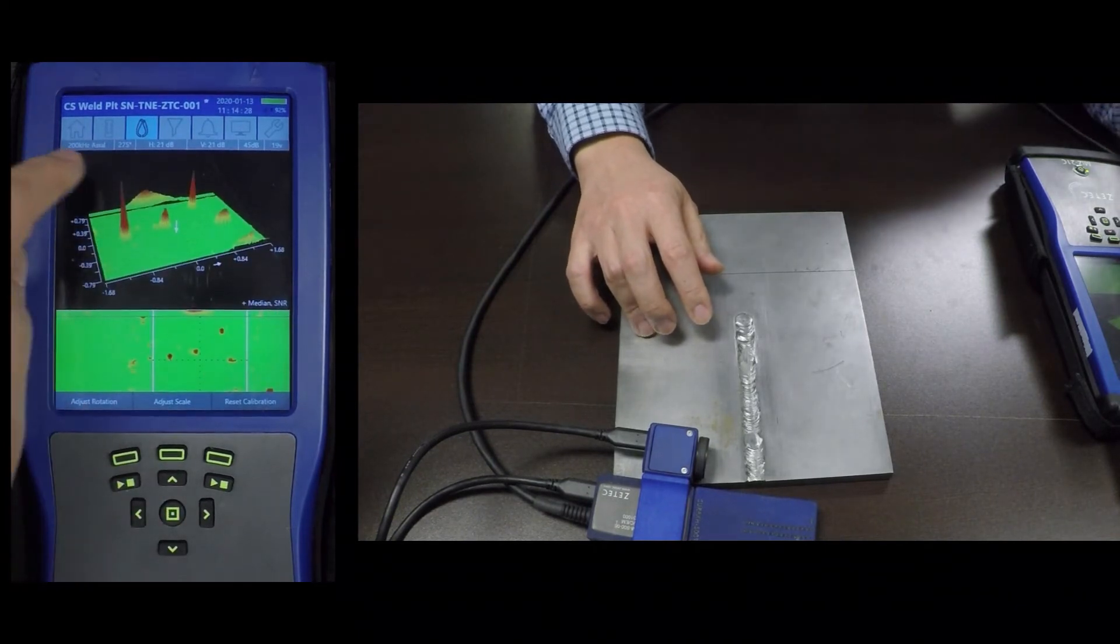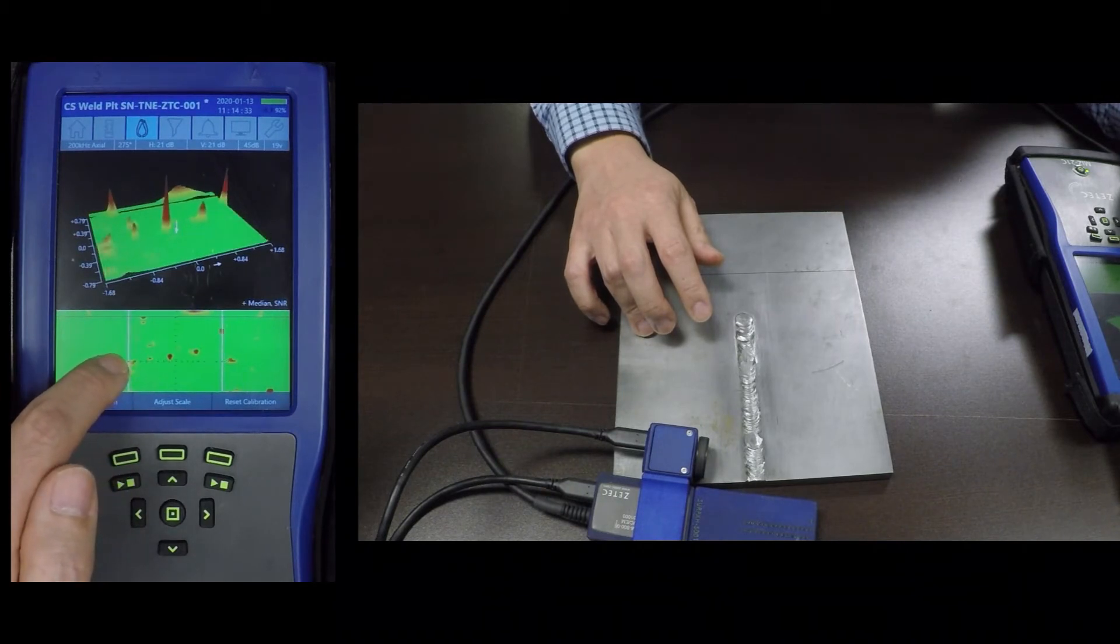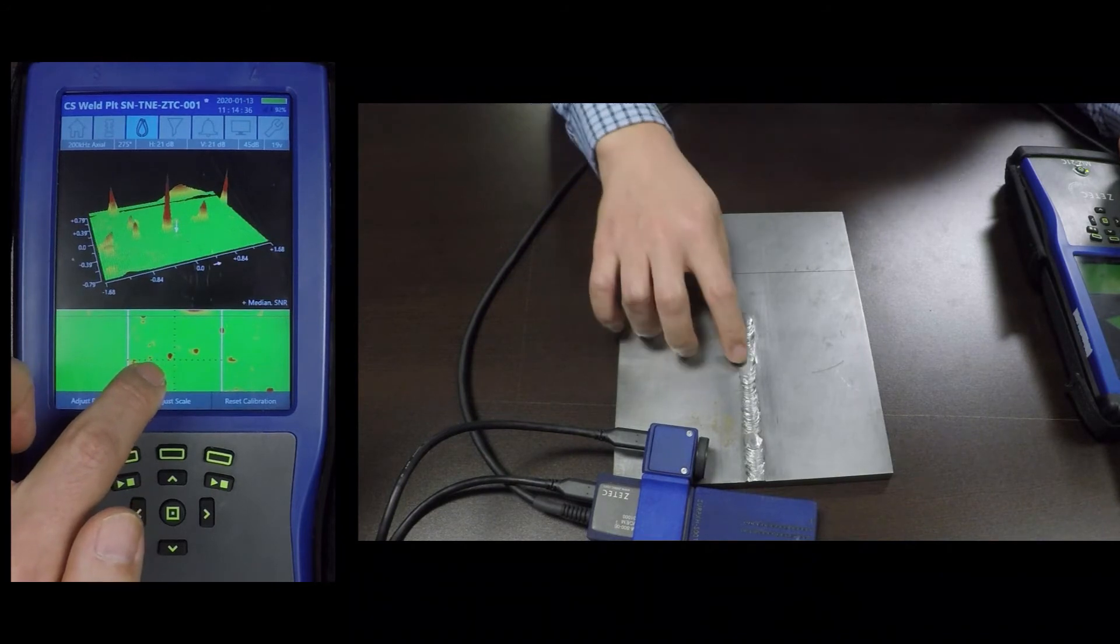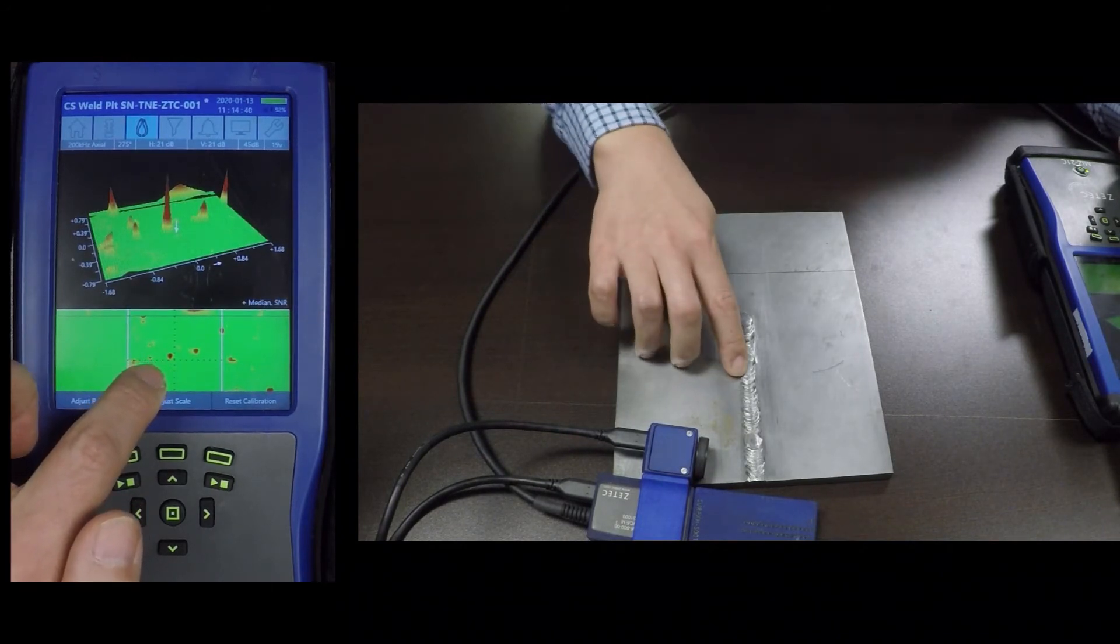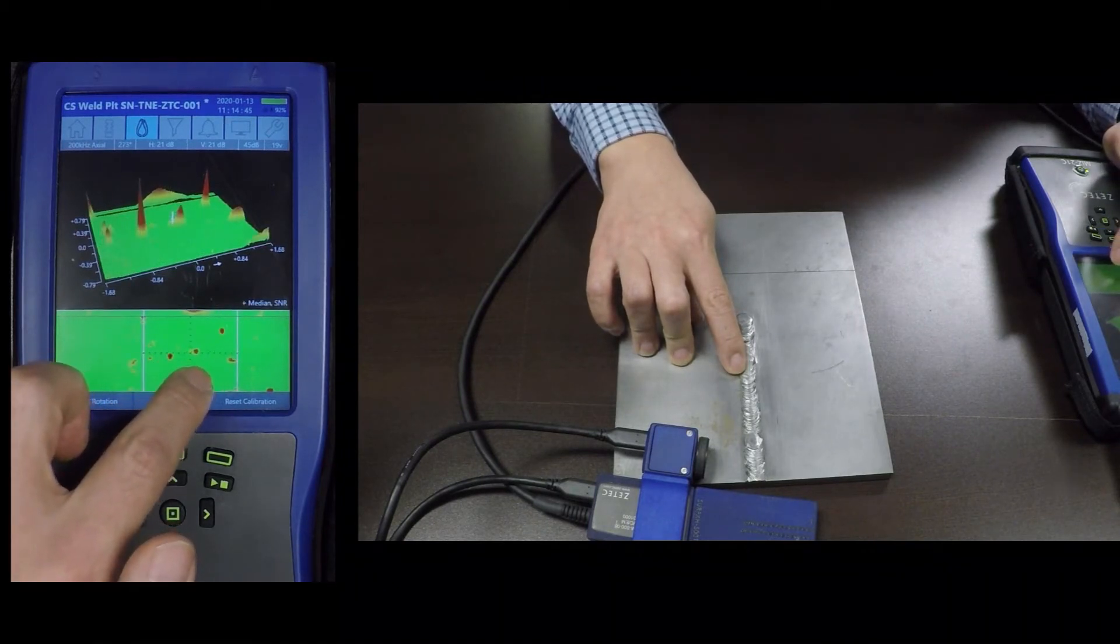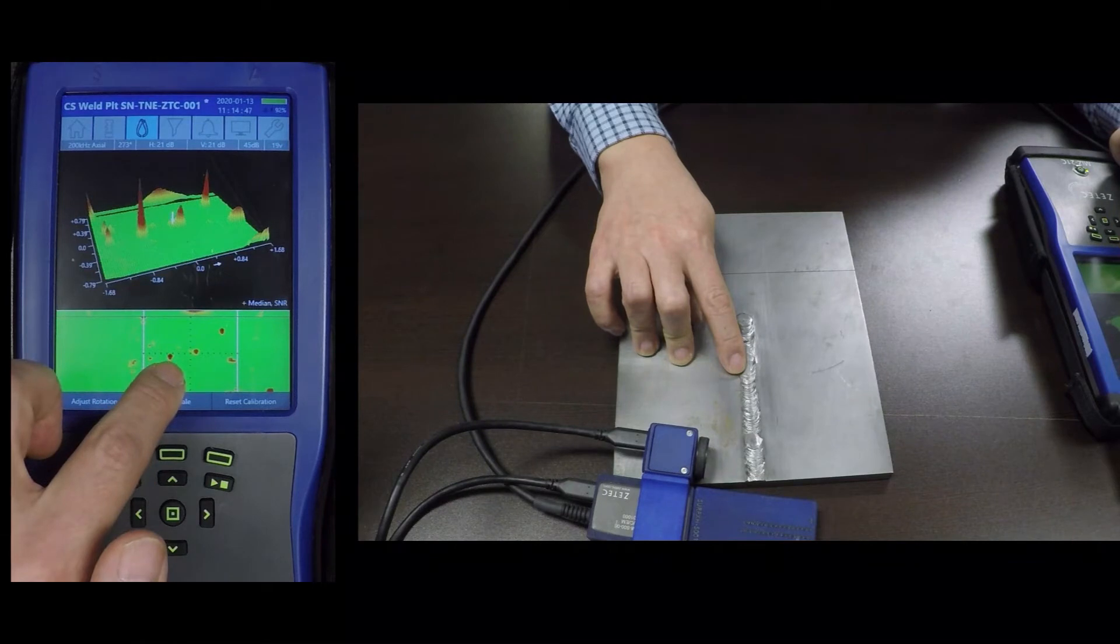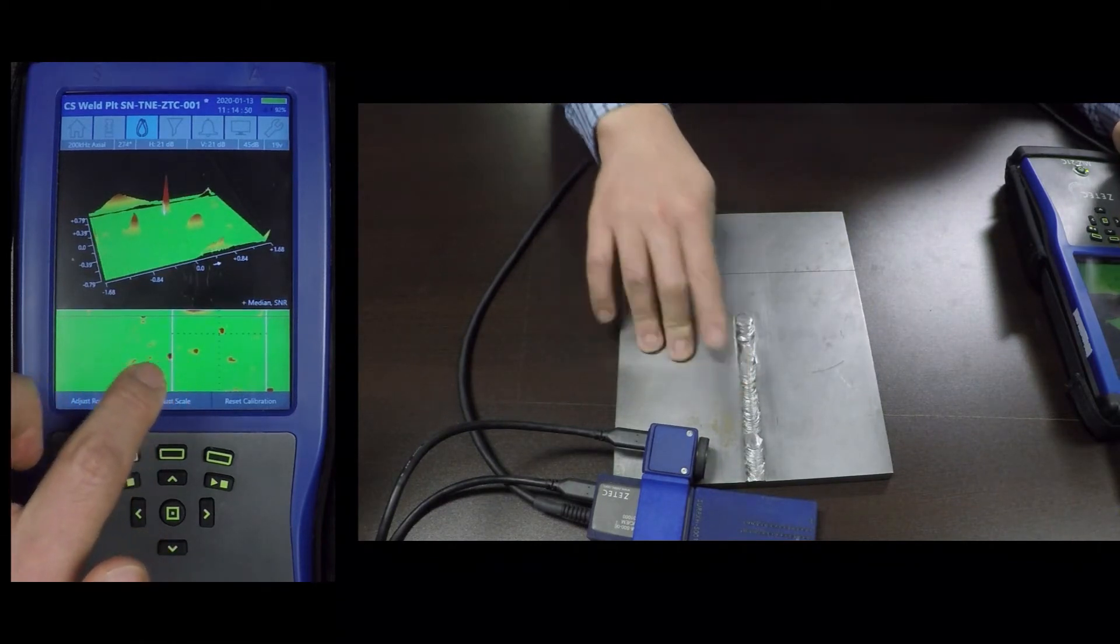And then this is my axial channel. So here again, I have this is the axial notch on the crown. And then this one right there in the middle would be the one in the toe area. And then this will be the one in the heat affected zone.